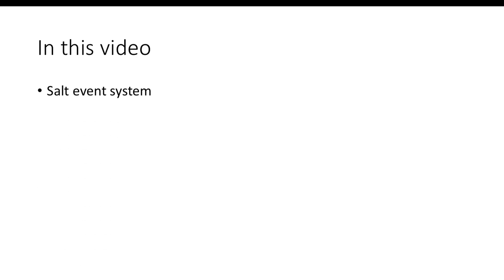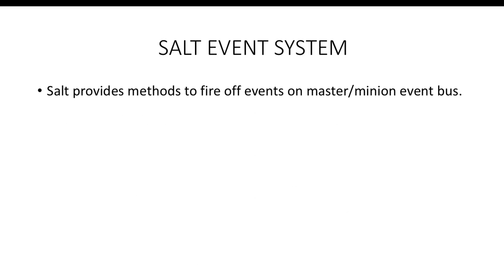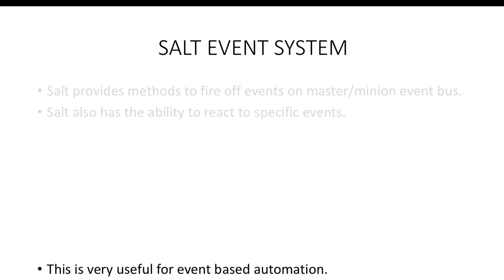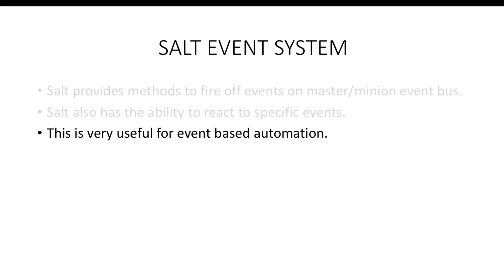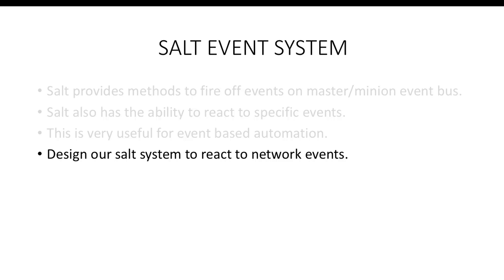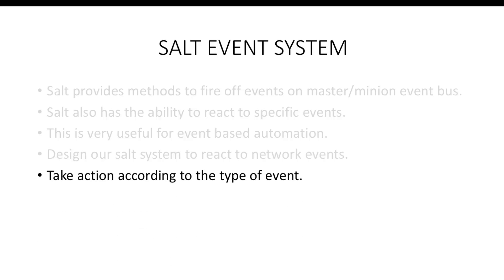In this video, we'll explore the SaltEvent system, the Junos syslog engine and the reactor system. Salt provides methods to fire off events on the master or the minion event bus. Salt has a unique ability to react to these specific events. This is very useful for event-based automation. We can design our Salt system to react to certain network events and take action based on the type of event.